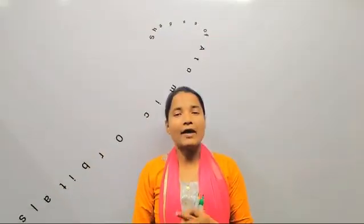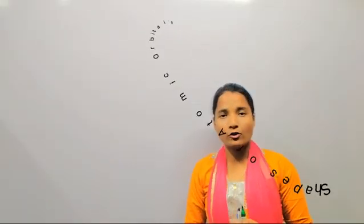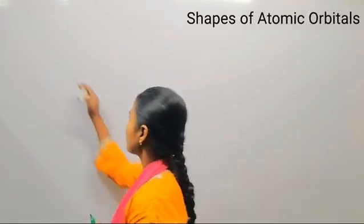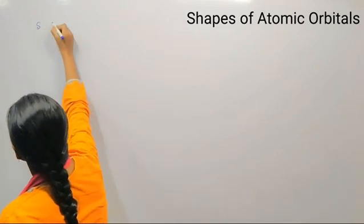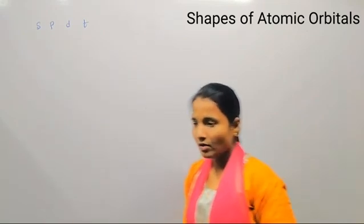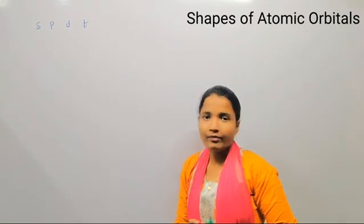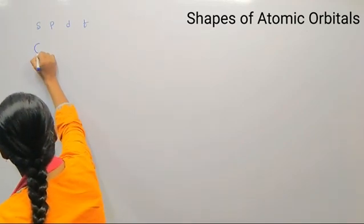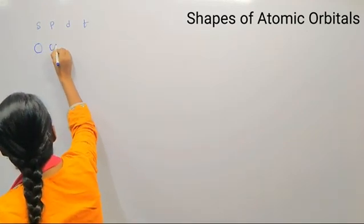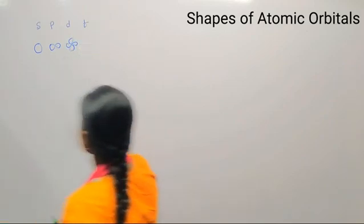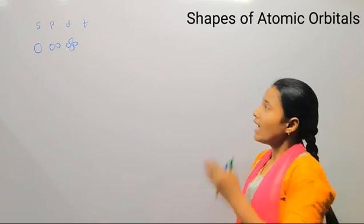In this lesson I will discuss the shapes of atomic orbitals. The different types of atomic orbitals are: s orbital, p orbital, d orbital, and f orbital. The s orbital has a spherical shape, the p orbital has a dumbbell shape, and the d orbital has a double dumbbell shape.